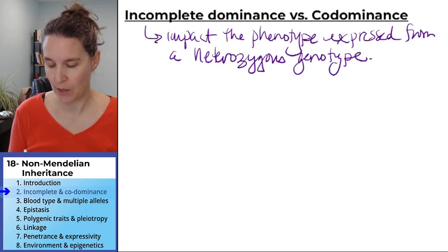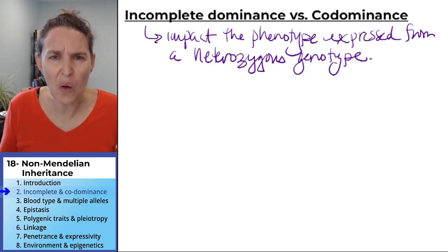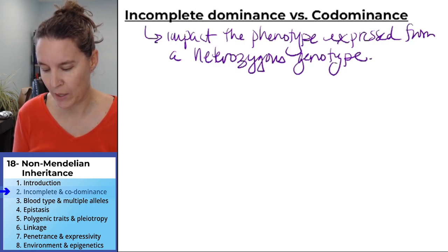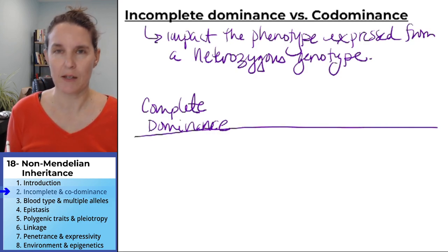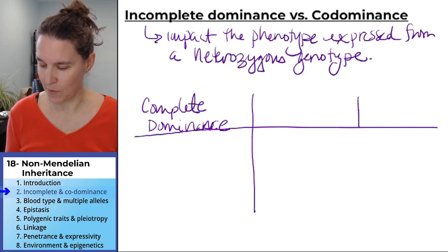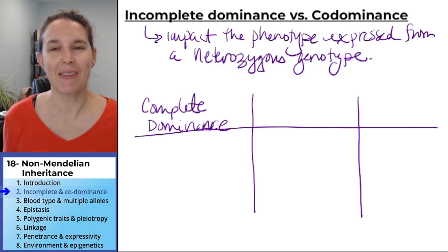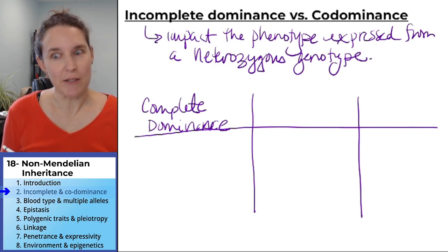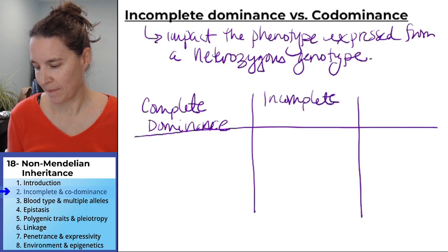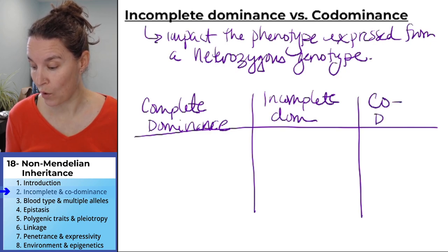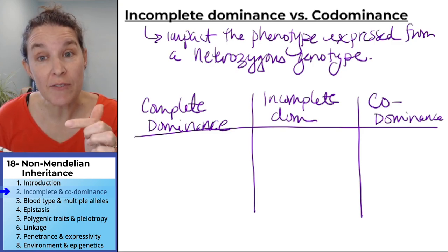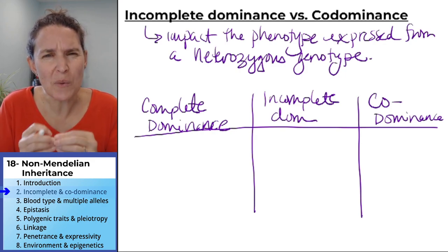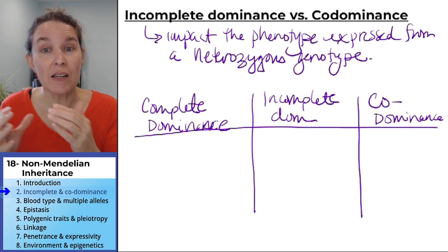We're going to compare all of these. I want to include what's normal — what we've been seeing. We call it complete dominance. Those are the three things we're going to compare: complete dominance, incomplete dominance, and codominance. Look at our definition again — the key we're looking at here is what do we see when we have a heterozygous genotype?